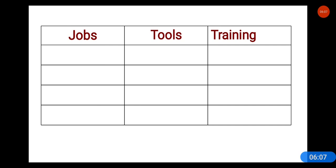In your book, on page number 40, find the jobs listed there. Write at least four jobs, the tools which are used in each, and the training — where they get it. Your time starts now. You can work with a partner or alone.